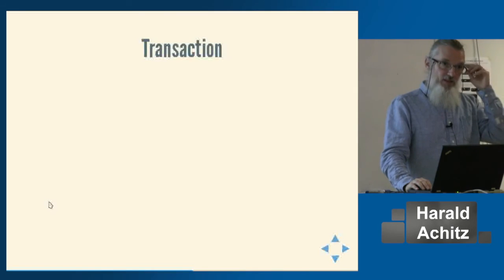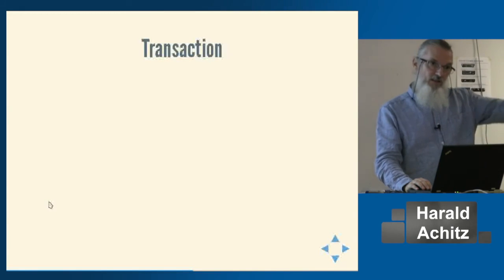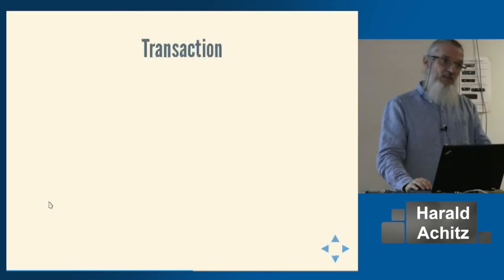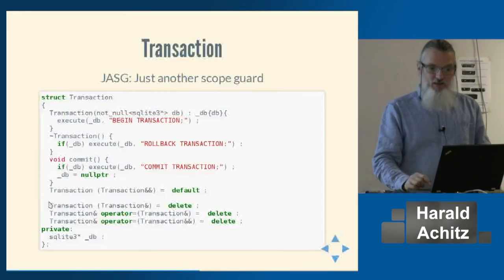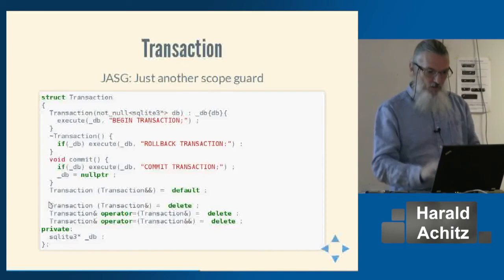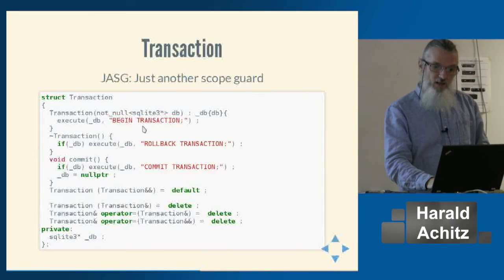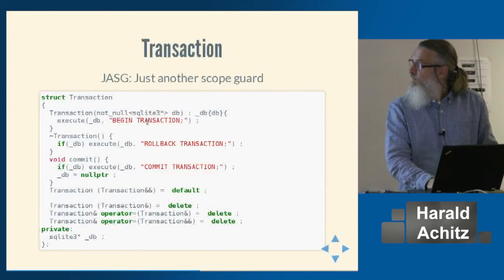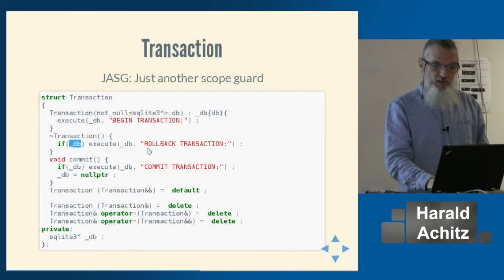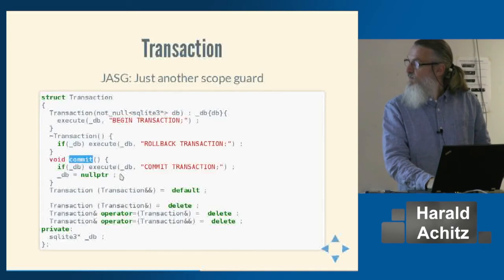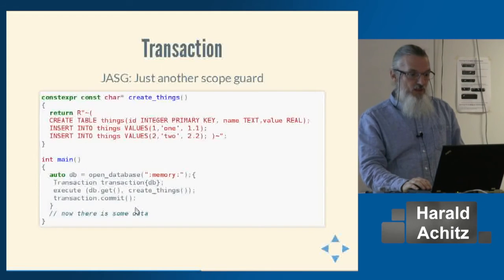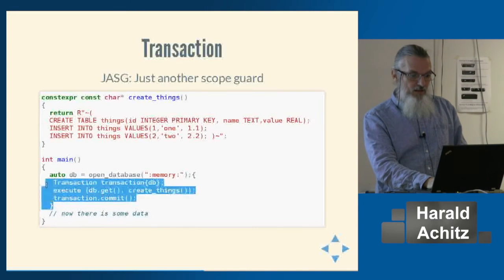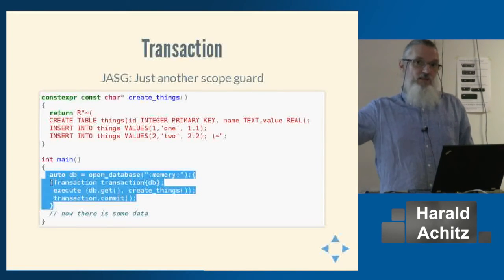Transactions: all or nothing — if you make three inserts within a transaction, either all three succeed or none do. A transaction is just another RAII scope guard. You encapsulate it: the constructor takes a database and calls BEGIN TRANSACTION. In the destructor, if we haven't committed, we roll back; if we commit, we notify that we have. The result: you either create a table plus two things, or you have nothing if it fails.